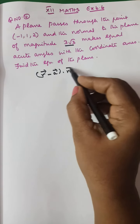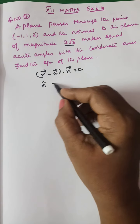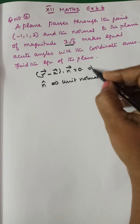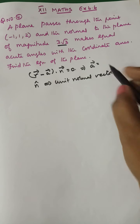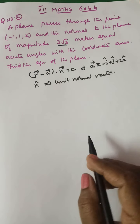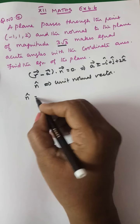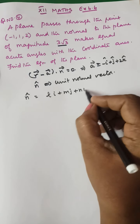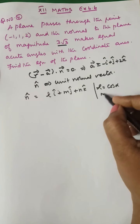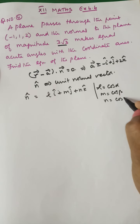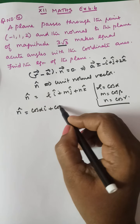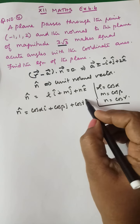N vector is the unit normal vector N̂. A vector is equal to (-1, 1, 2), which is -i + j + 2k. The unit normal vector N̂ equals Li + Mj + Nk, where L equals cosα, M equals cosβ, and N equals cosγ. So N̂ equals cosα·î + cosβ·ĵ + cosγ·k̂.